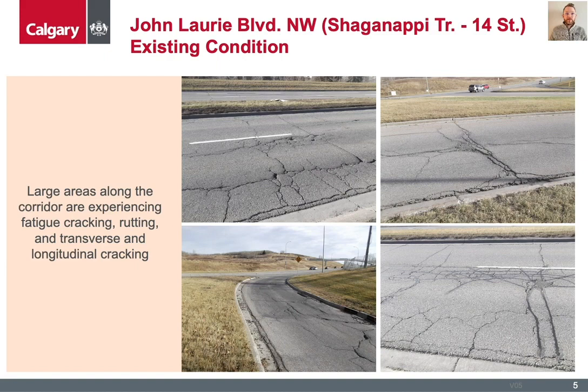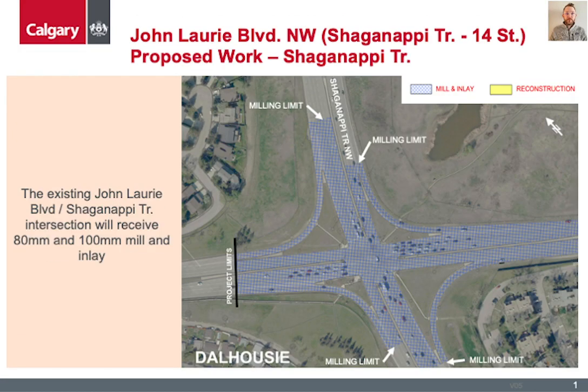Further, the underlying soil conditions at the Brisewa Drive intersection is resulting in frost heaving of the existing pavement. It is for these reasons that this section of John Lurie Boulevard is being rehabbed as part of this project. At the Shaganapy Trail and John Lurie Boulevard intersection, the existing pavement will receive mill and inlay of 80 to 100 mm in depth to the limits shown on the image, north, south and west of the intersection. This milling will help repair both cracking and rutting in the existing pavement.